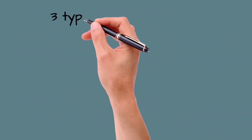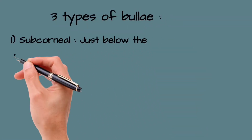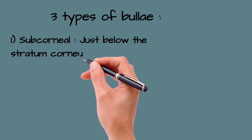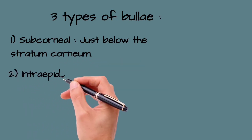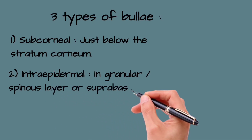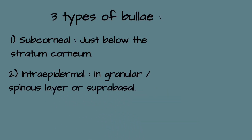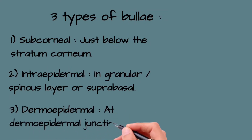There are three types of bullae based on the level of split in skin. In subcorneal bullae, the level of split is just below the stratum corneum. In intraepidermal bullae, the level of split is in the granular or spinous layer, or suprabasal. In dermoepidermal bullae, the level of split is at the dermoepidermal junction.